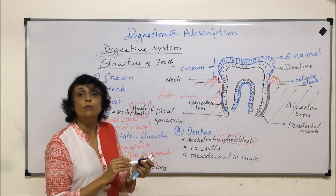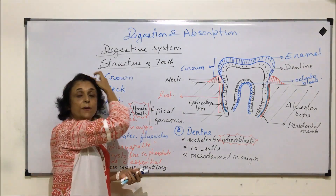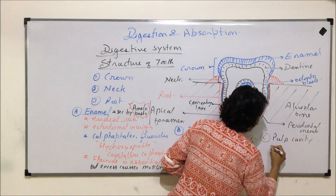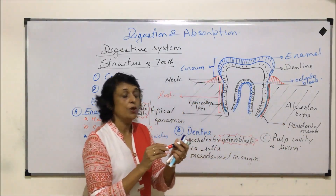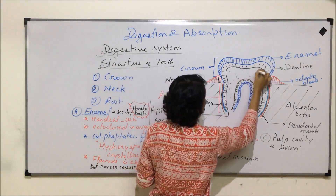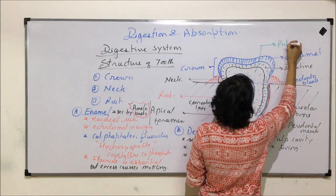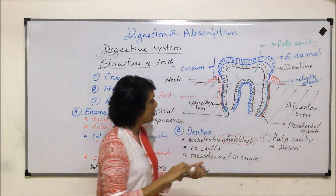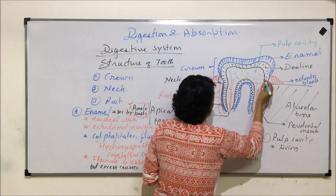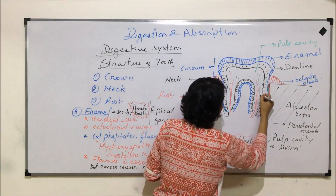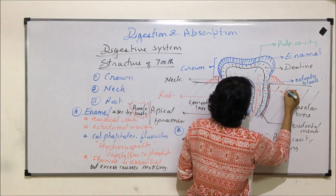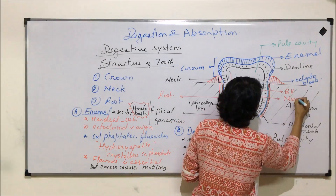The third and innermost layer is known as the pulp cavity. The pulp cavity is living — it has connective tissues, blood vessels, and nerve fibers. This entire inner region is called pulp. Inside, the red structures represent blood vessels and the black structures represent nerve fibers.